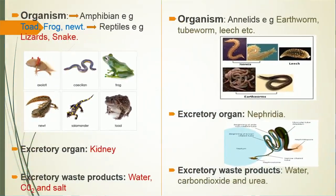Another organism is amphibia. Examples include salamander, toad, frog, newt, and others. Now, reptiles — examples include lizard, snake, gecko, crocodile, and so on. The excretory organ for both is the kidney. Excretory waste products include water, carbon dioxide, and salt.